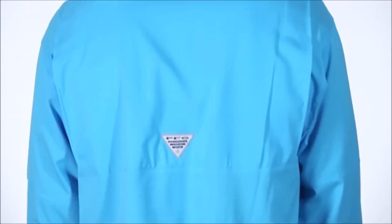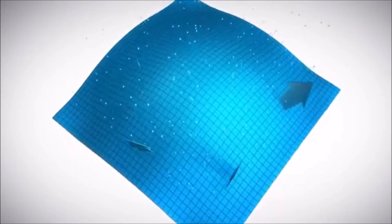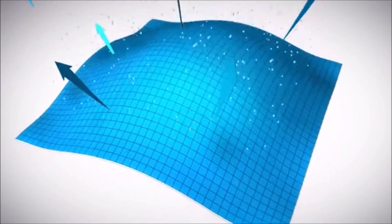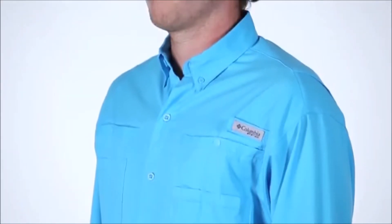To keep you dry, the Tamiemi II boasts Omniwick technology, which pulls moisture away from the body and spreads it out across the surface of the fabric, enabling it to evaporate quickly. It keeps you dry and comfortable during physical activity in the outdoors.